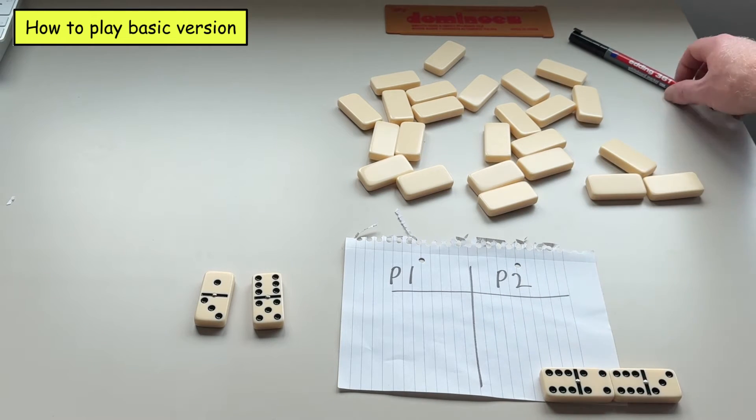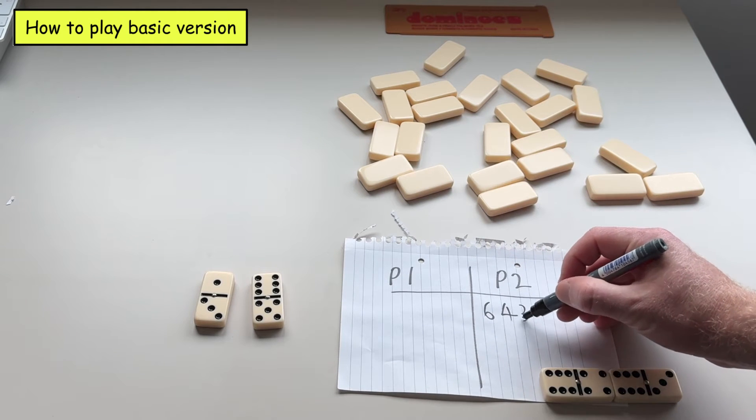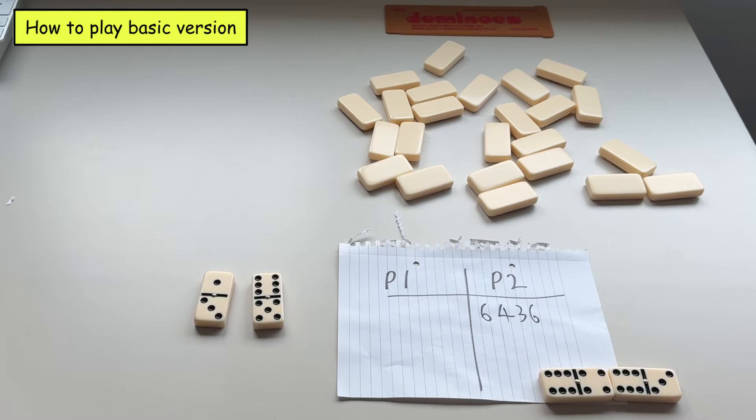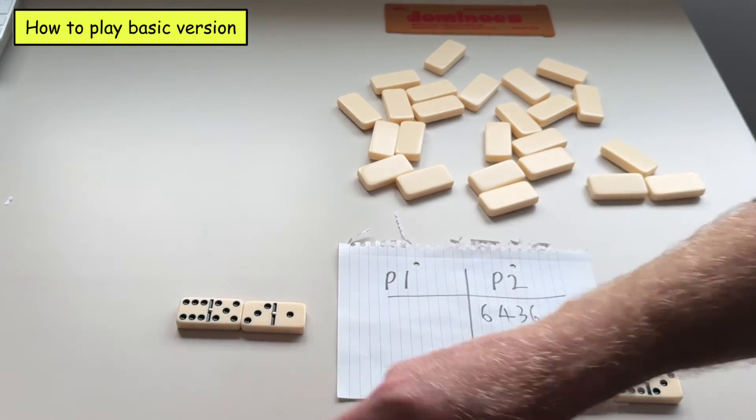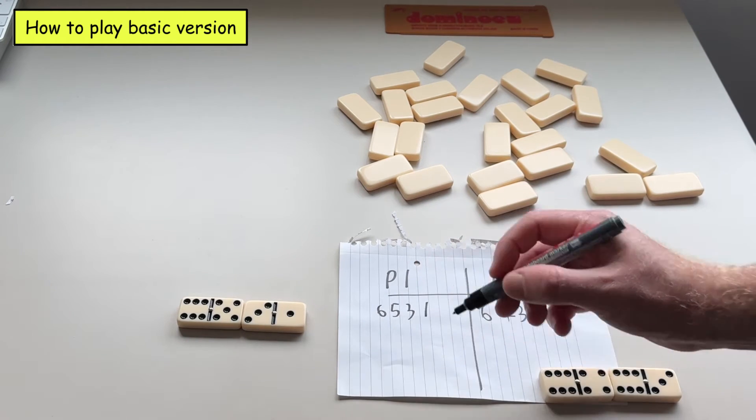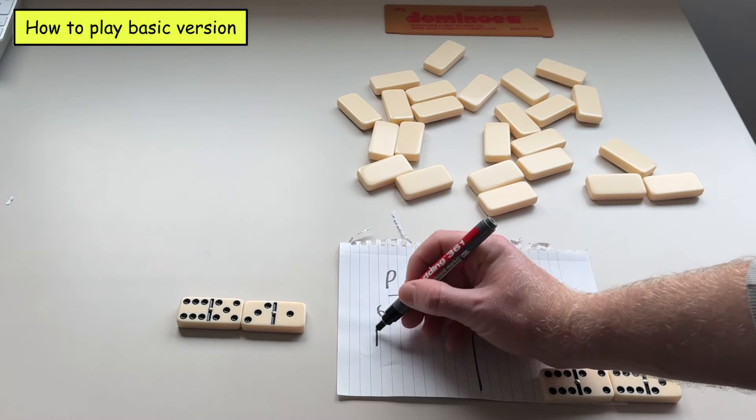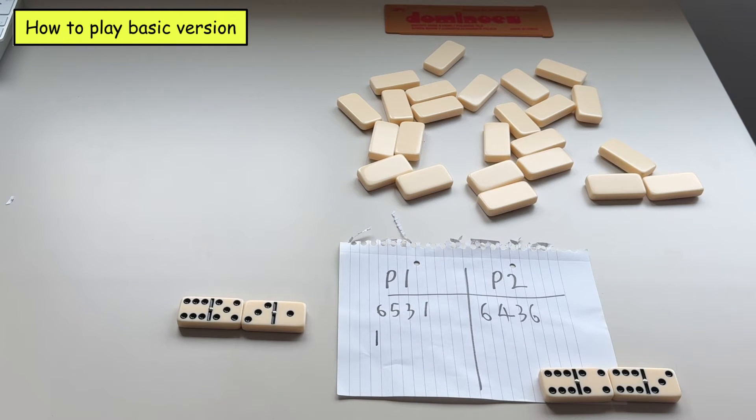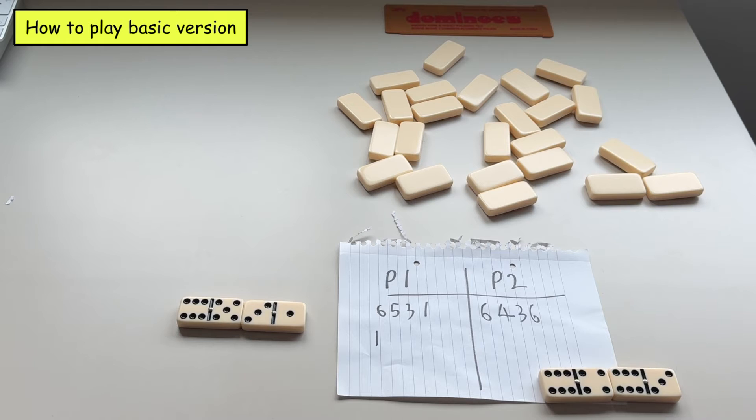So in this example player one has six thousand four hundred and thirty six. Player one the highest number that they could have made was six thousand five hundred and thirty one and the player which had the highest number is player one so they receive one point. And then you just keep repeating this until there are no dominoes left and the player which has the most points wins the round.